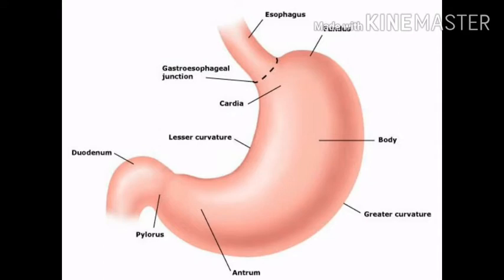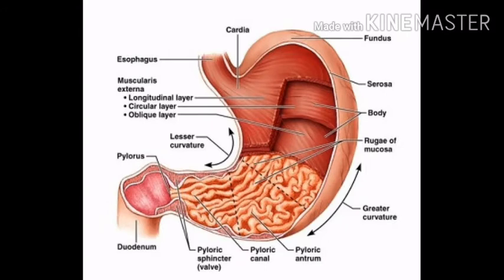Digestion of protein and lipids starts partially from the stomach. The food then comes to the small intestine, which is approximately six meters long. It is divided into three parts: the first is the duodenum, then the jejunum, and the ileum. The duodenum is C-shaped in the middle. Two different ducts open here: one is the bile duct and another is the pancreatic duct.